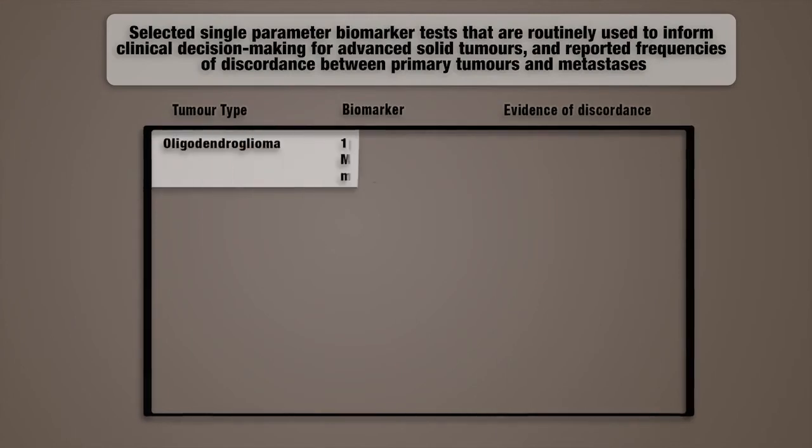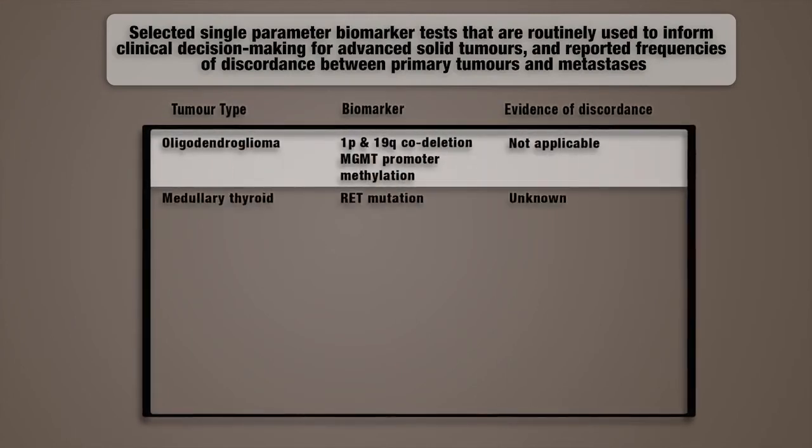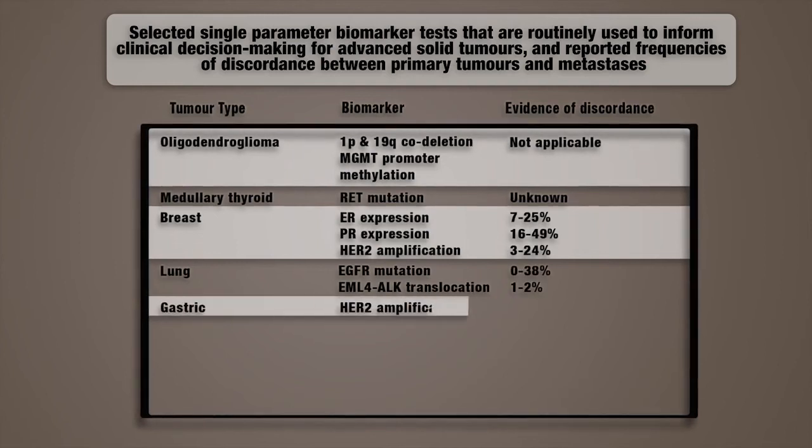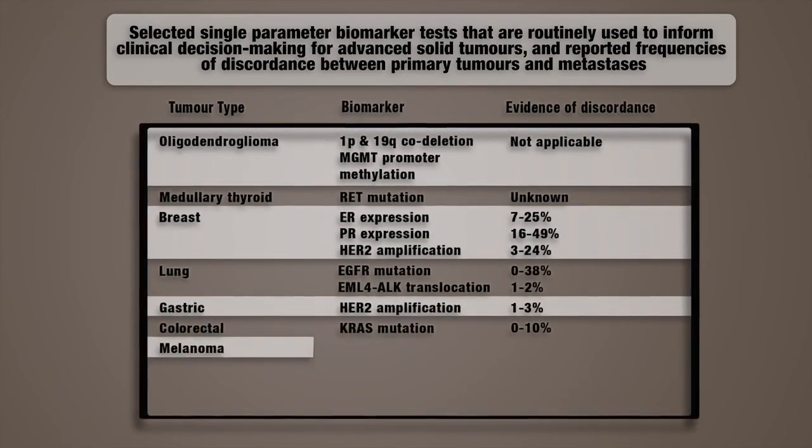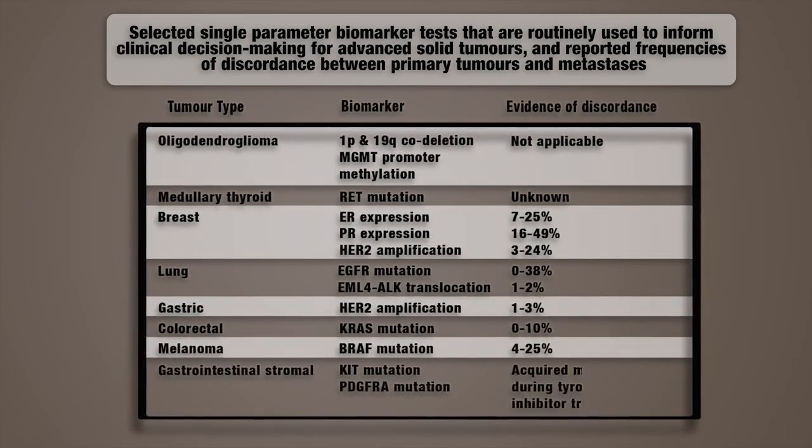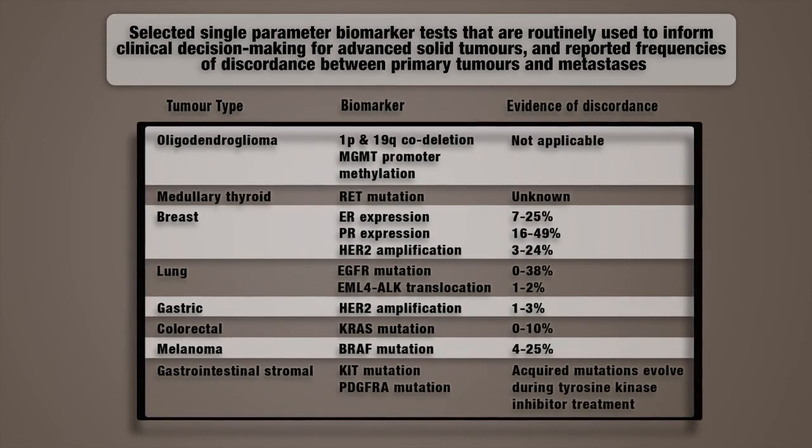Intrapatient tumor heterogeneity poses a challenge to the development of personalized cancer medicine. Sampling a limited region of a tumour biopsy or a single block from a surgical resection specimen may not adequately capture the heterogeneity within a patient's cancer. For example, it is increasingly recognized that many prognostic and predictive biomarkers that are routinely tested in a clinical setting may be discordant between the primary tumour and the metastasis. Only the most aggressive subclones may survive under the selection pressure of treatment or be fit for metastasis.